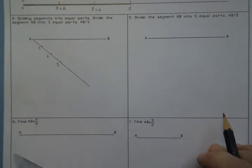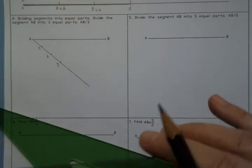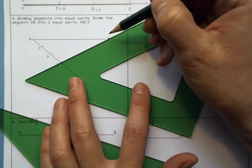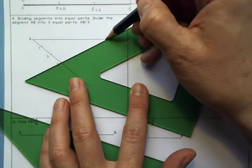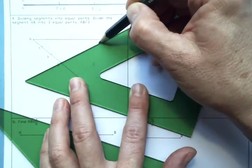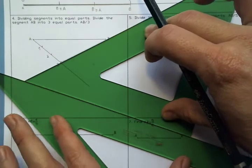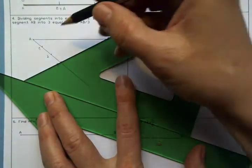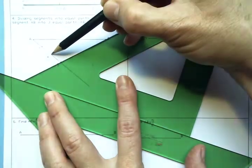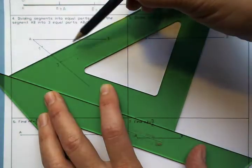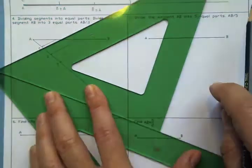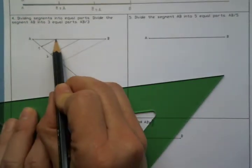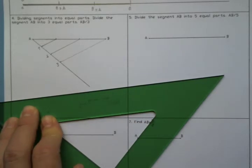Next, you have to join number three to B. And we are going to draw parallel lines. A parallel line from point two and a parallel line from point one. Here I have three equal segments.